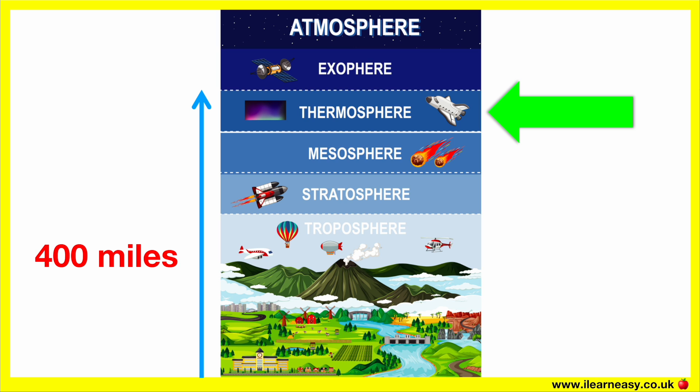To summarise: the thermosphere is the fourth layer. The air in this layer is very thin and it can become quite hot. It's cloud and water vapour free, it contains the ionosphere, and it's where the aurora occurs.